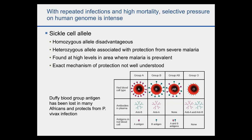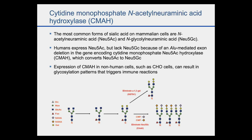I'm going to talk about one story among many about malaria's impact on the human genome and evolution. One I want to briefly mention is cytidine monophosphate N-acetyl neuraminic acid hydrolase, or CMAH. This encodes the most common forms of sialic acid on mammalian cells: N-acetylneuraminic acid (Neu5AC) and N-glycolylneuraminic acid (Neu5GC). Humans express Neu5AC but lack Neu5GC because of an ALU-mediated exon deletion in the gene encoding CMP-Neu5AC hydrolase — found only in humans and not in our nearest neighbors such as chimpanzees and gorillas.